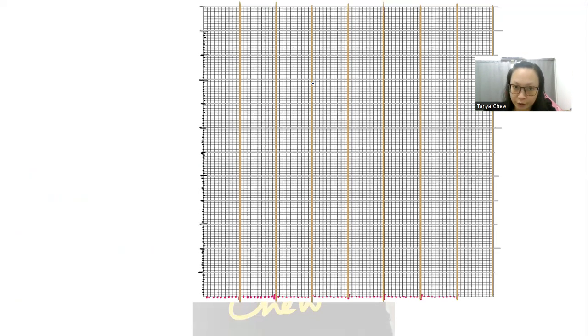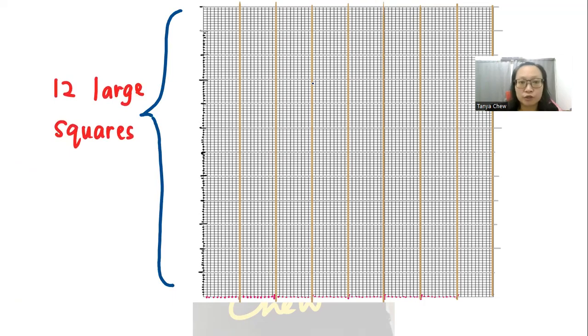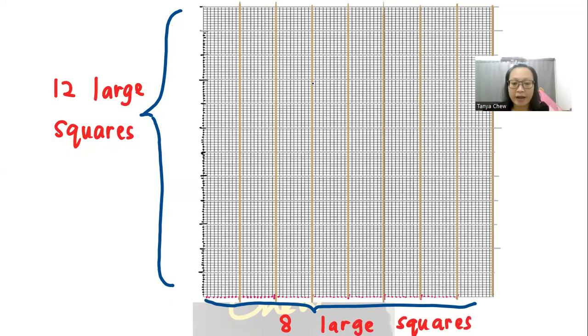So this is a graph that is given here in your paper. Do you know that there are 12 large squares on your y-axis and there are 8 large squares on your x-axis? For y-axis, you need to make sure that your points scattered at least six large squares. Whereas for the x-axis, you need to make sure that your points scattered at least four large squares.